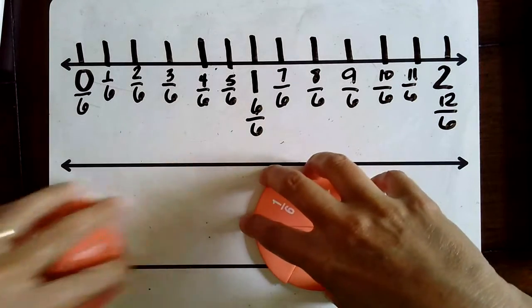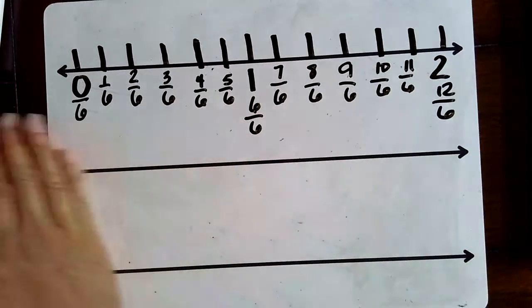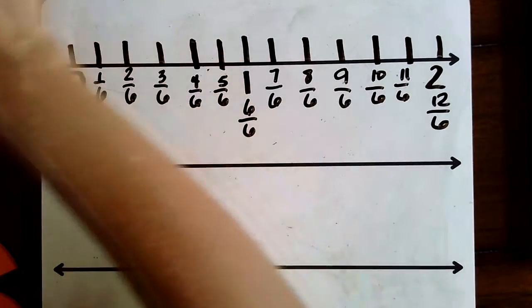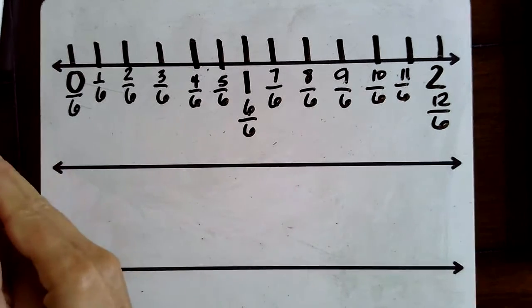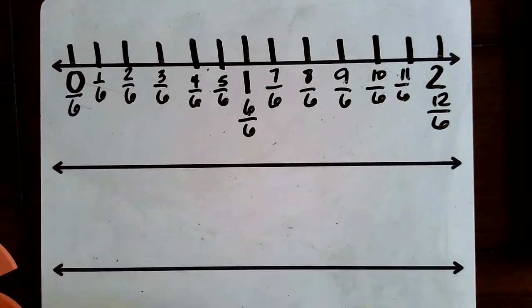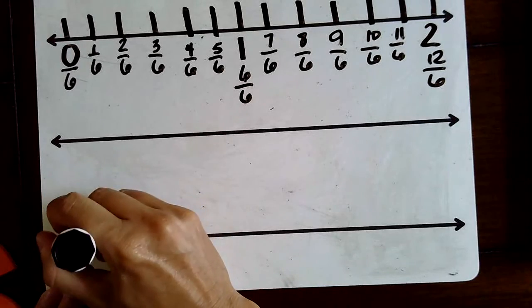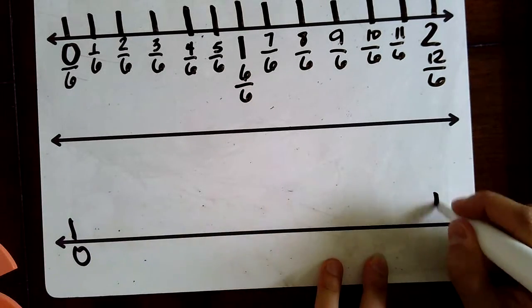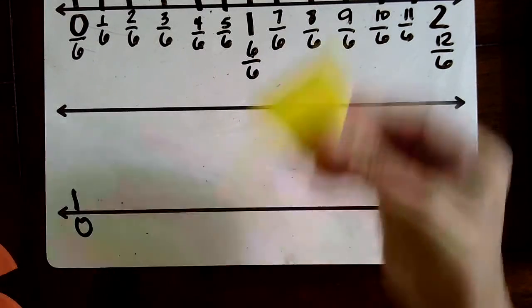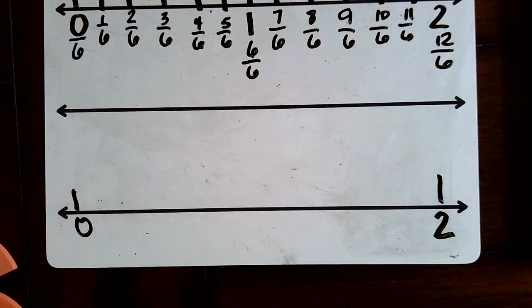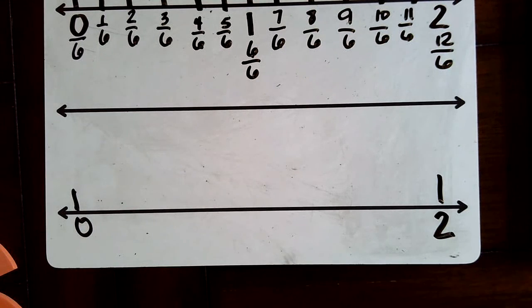Your job is to draw a number line and divide it into fourths going from zero to two. So you're going to draw a number line, start with zero, end with two wholes, and partition it off into fourths. Go ahead and do that. Send a picture or add your comment after the video telling us how you did it.